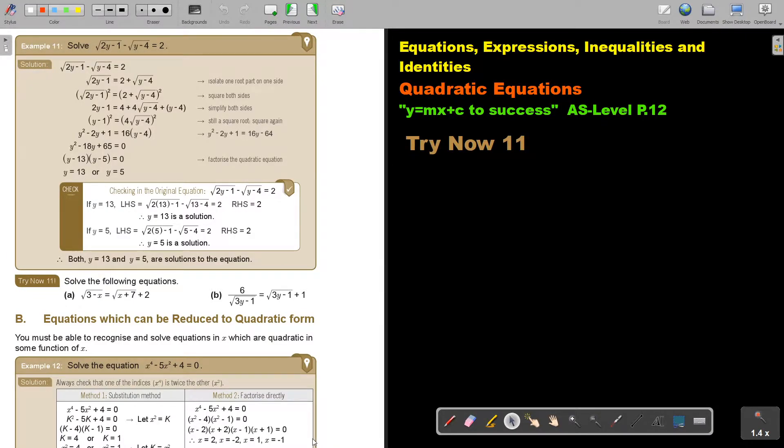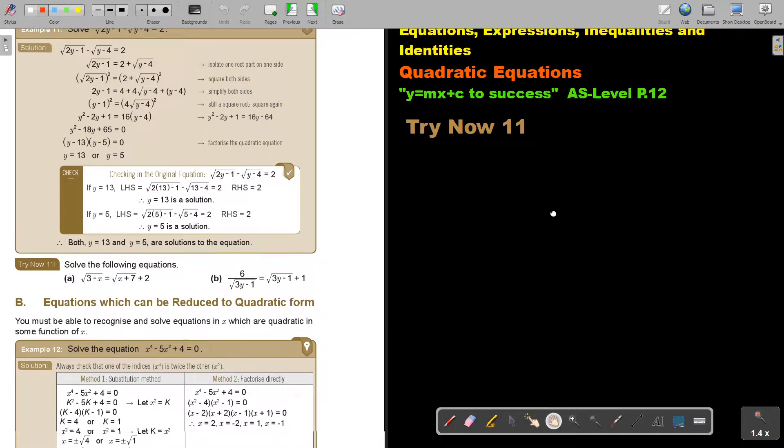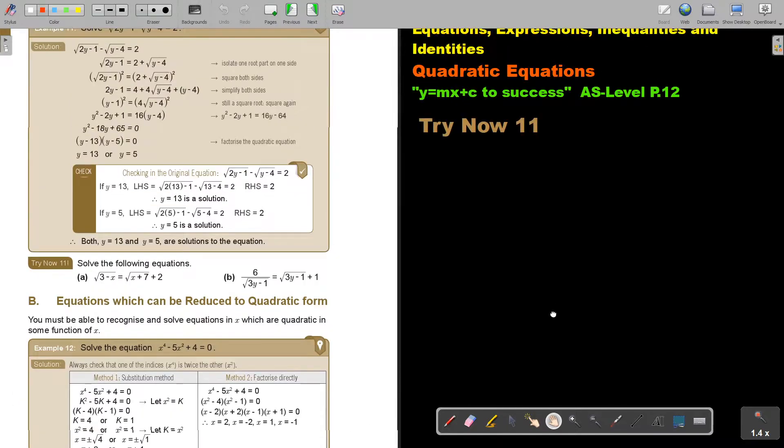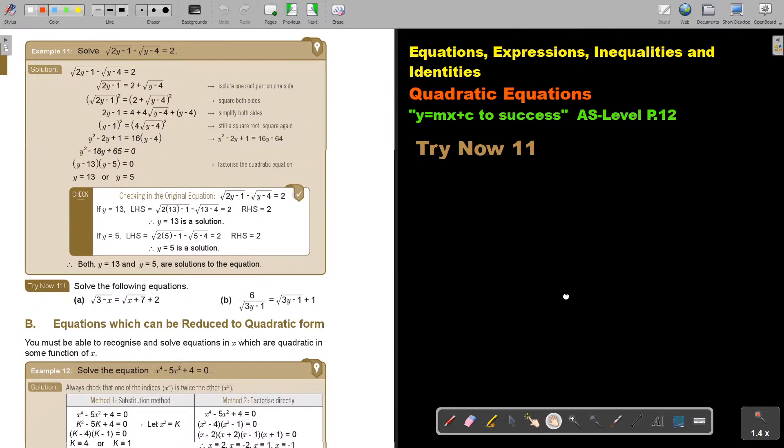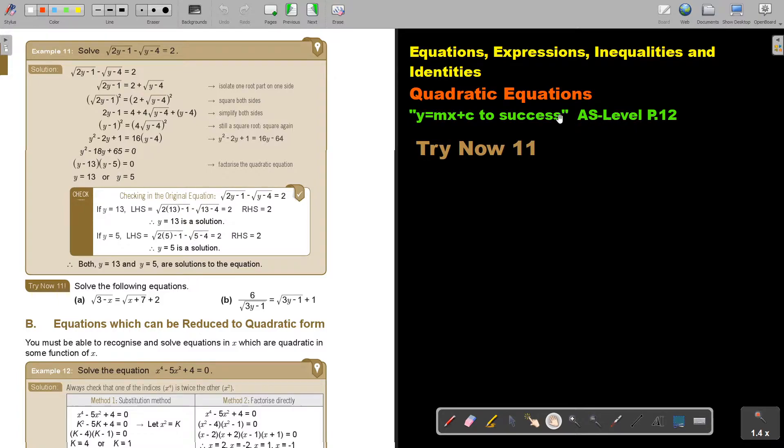In this video, we are going to continue with quadratic equations and we're still going to focus on the ones involving square roots. You will find this on page 12 in the Namibia AS level mathematics textbook Y equals MX plus C266.